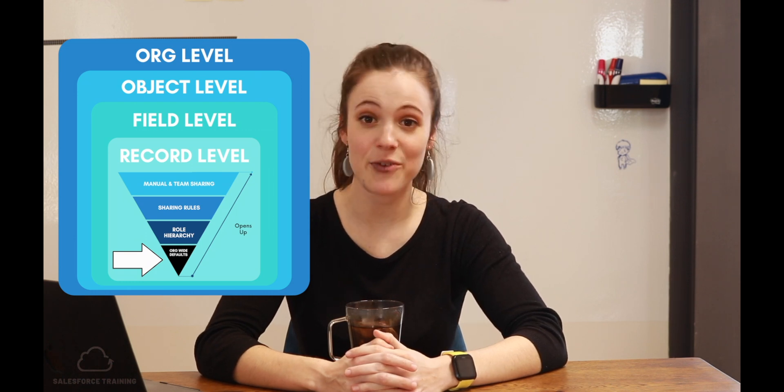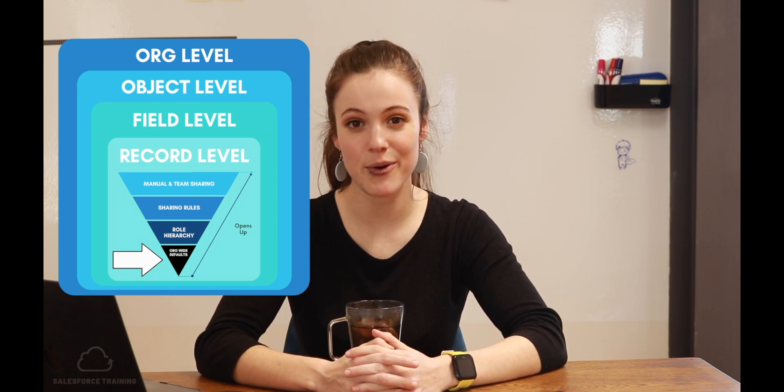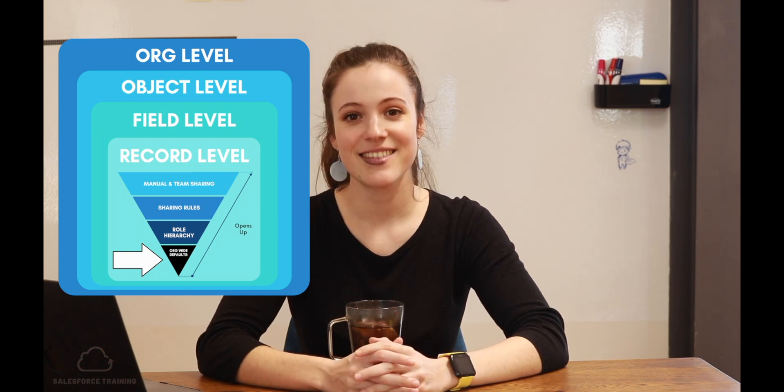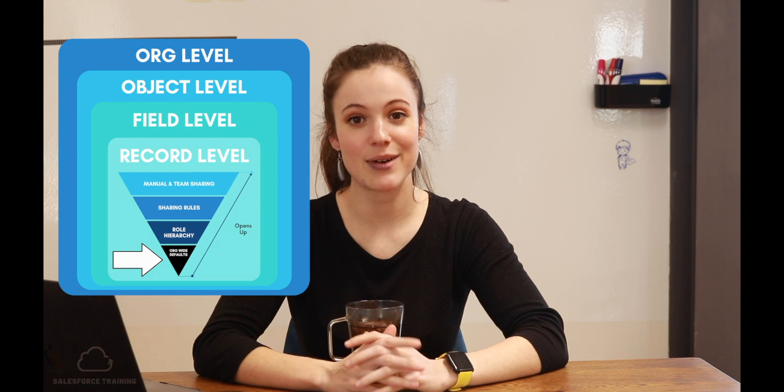Let's talk about organization security controls. The first thing I want to clarify is what is the difference between organization security controls and org-wide defaults — these are very easy to get mixed up. Org-wide defaults are part of our record sharing hierarchy, so when we want to talk about how we share records to individual people, we're talking about org-wide defaults. These are completely different to our organization security controls.